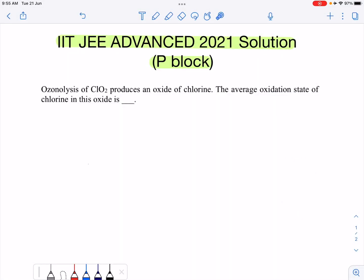Hello and welcome to J.E. Sutra. We have this question from JEE Advanced 2021, P block chapter. The question says ozonolysis of ClO2 produces some oxide of chlorine and you need to find out the average oxidation state of chlorine in this particular oxide. As you all know, ozonolysis means breaking in presence of ozone.